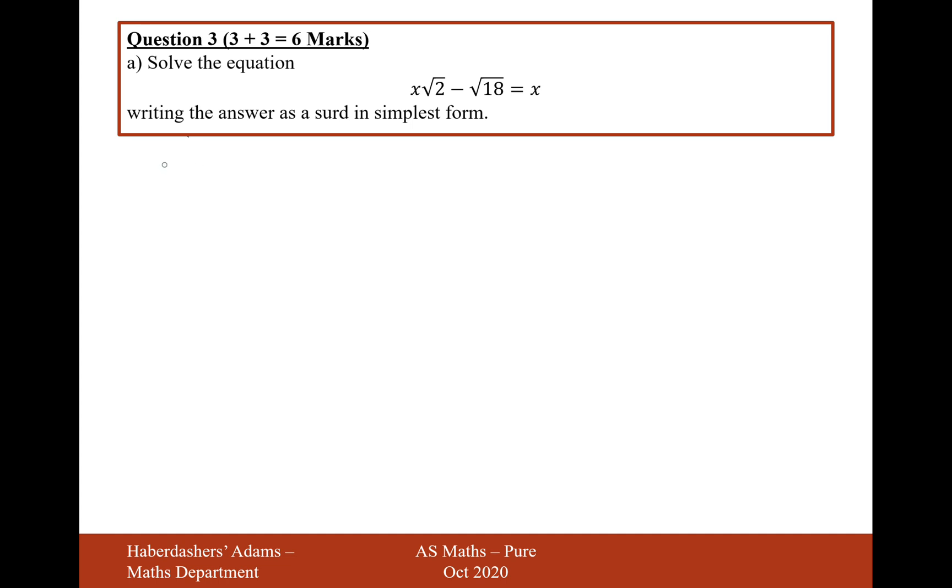We want to group all the x's together first, so if we start with x√2 and then minus that x onto the left-hand side, and then move the √18 onto the right-hand side.